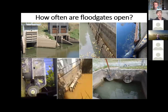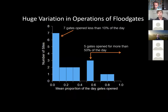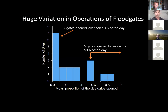We wanted to really start trying to understand how these things were operating. We knew there were a lot of them on the landscape, but they had essentially been considered benign — managers thought that once they're open, fish can pass, not a big deal. A masters student named Rebecca Seaford actually went around the lower mainland and put cameras on floodgates to see when they would open and for how long. She found a huge variation in how these gates were operating — some open every day for about half the day, but a significant portion of gates are really closed the vast majority of the time.